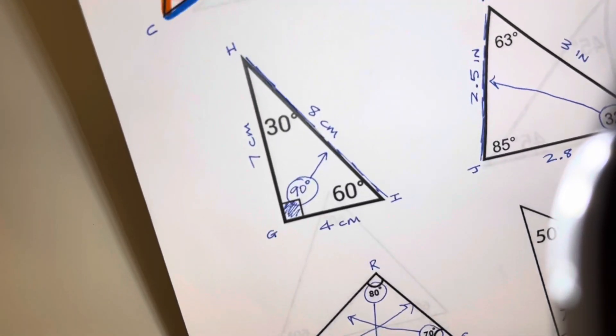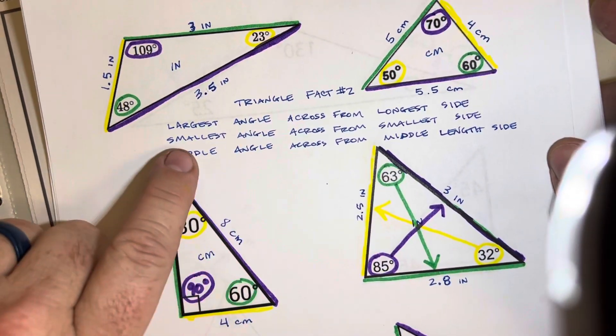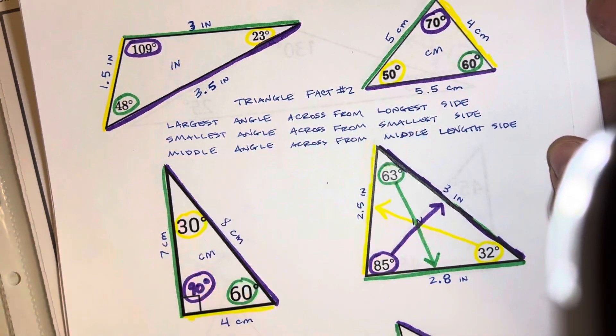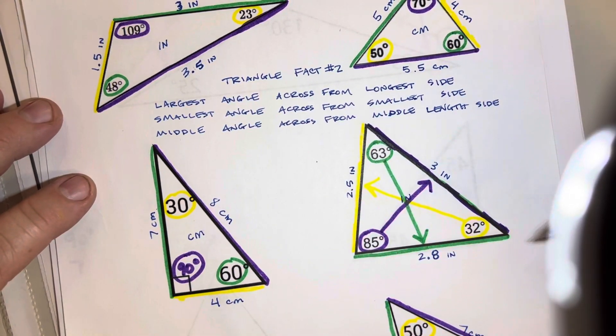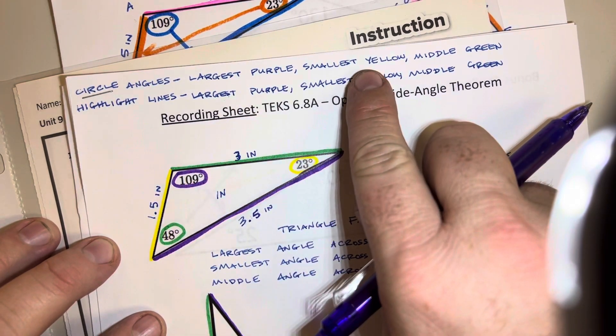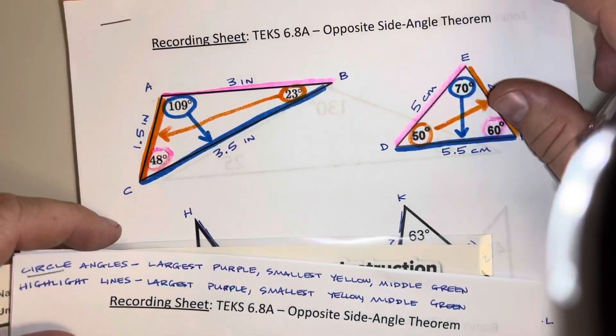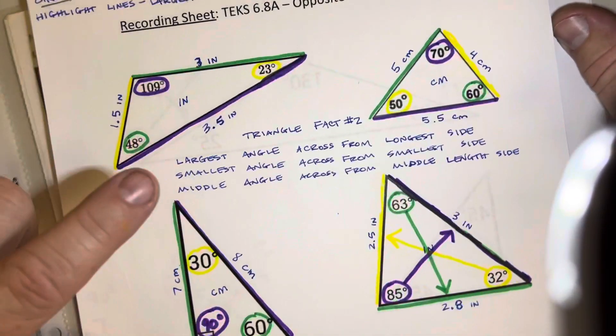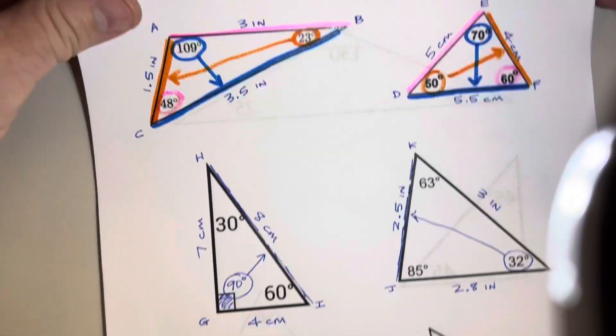And we ended up writing that relationship like this. We ended up writing largest angle across from longest side, smallest angle across from smallest side, middle angle across from the middle side. As you can see, we used different colors today in class. I think we used purple for the largest, yellow for the smallest, and then green was the middle. And so the colors don't really matter. It's just understanding that relationship right here. And that helps us when we're trying to identify things about triangles.